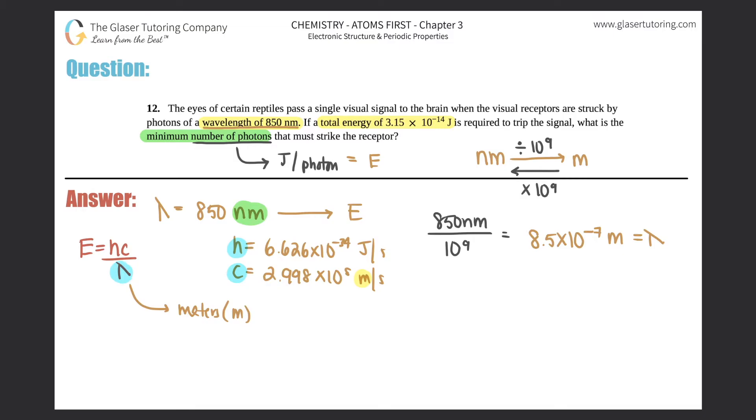So let's go: energy equals h, which is 6.626 times 10 to the negative 34th, times the speed of light, 2.998 times 10 to the eighth, all over my new wavelength in meters, which is 8.5 times 10 to the negative seventh. Do that math in the calculator, you get an energy value of, let's see...